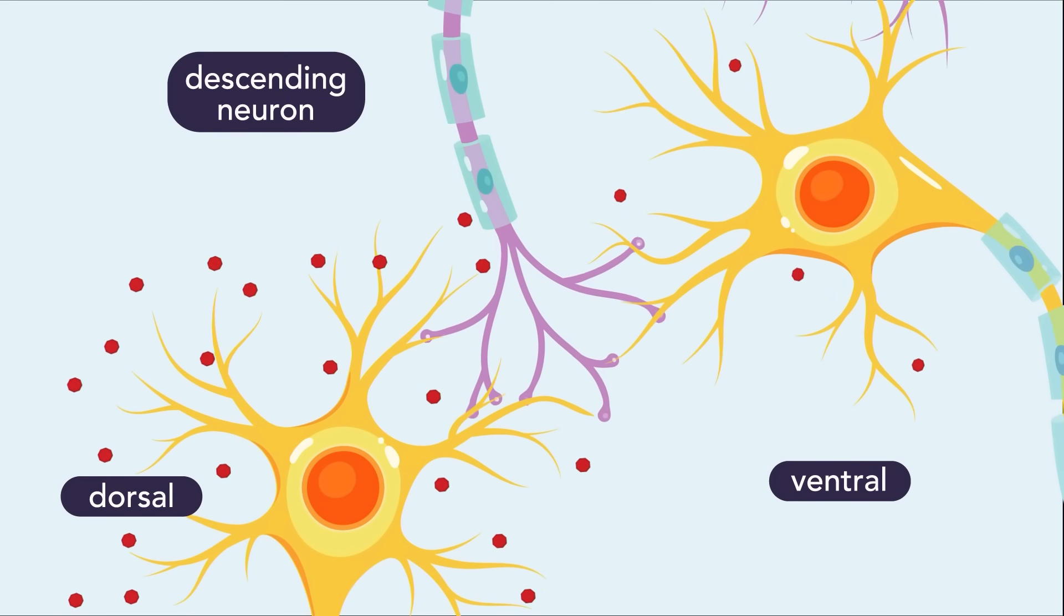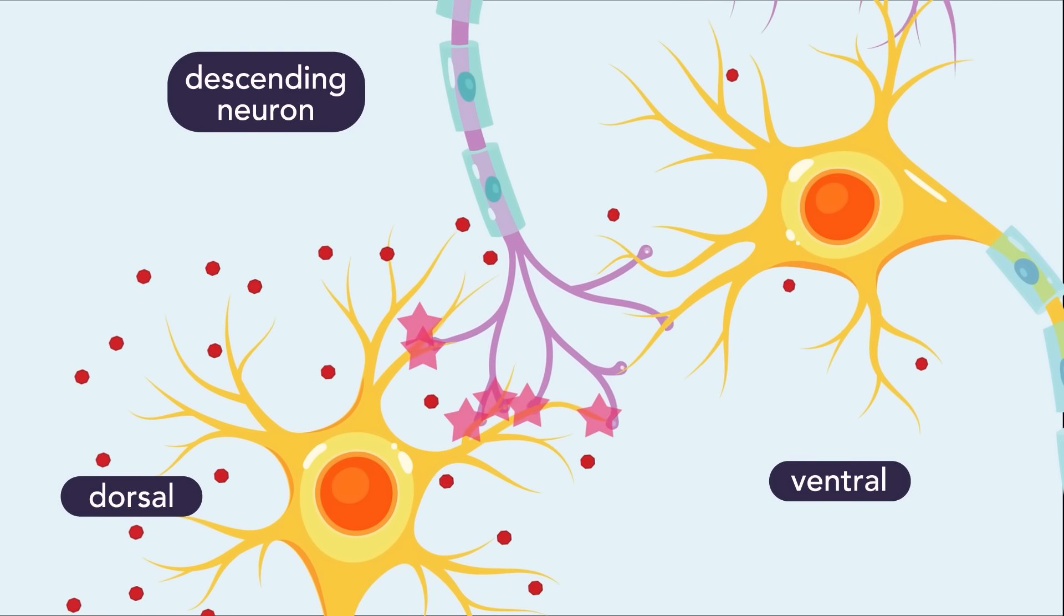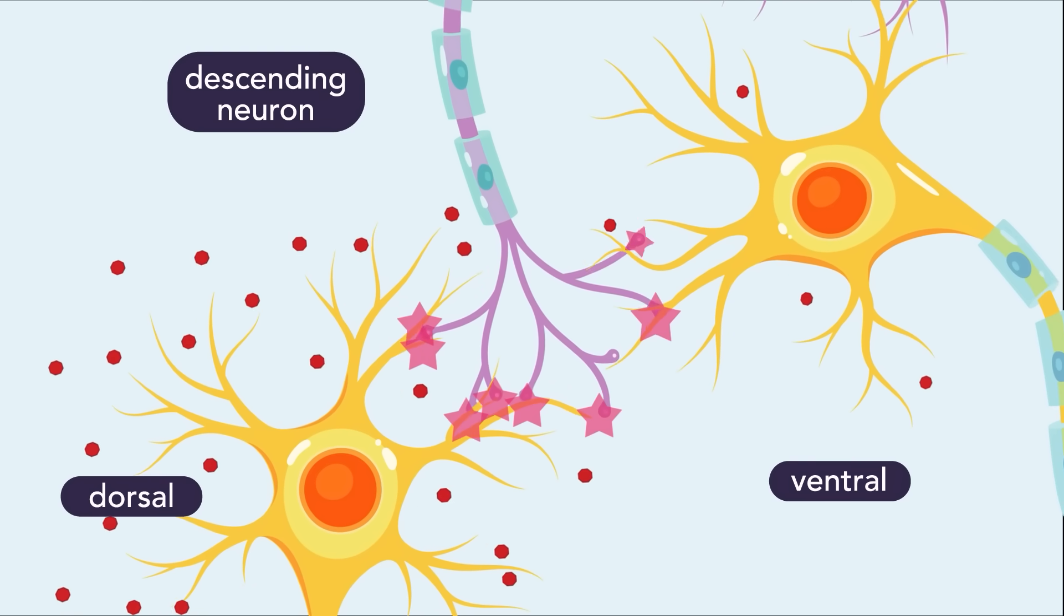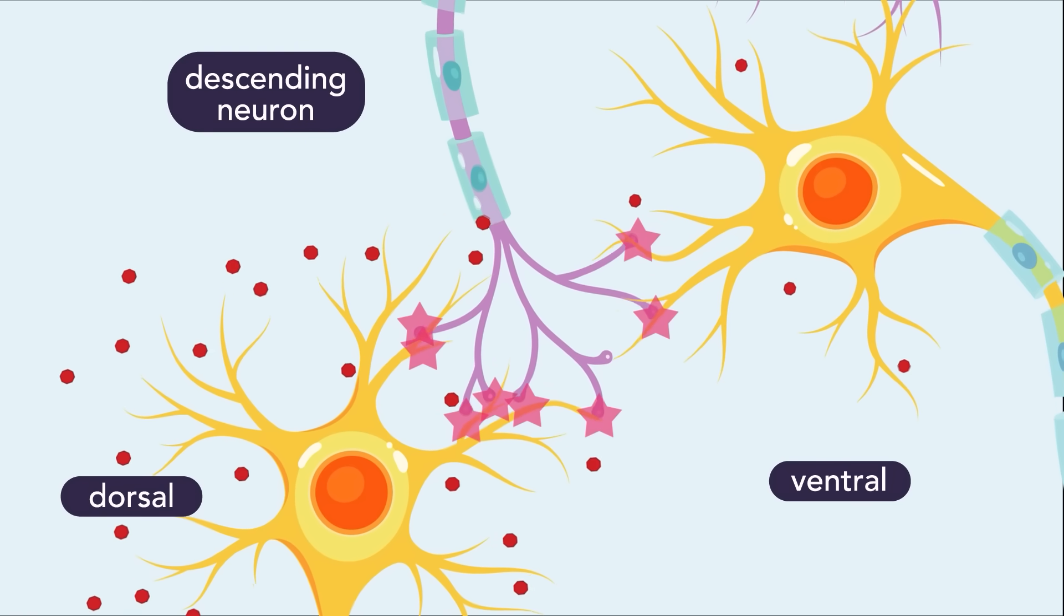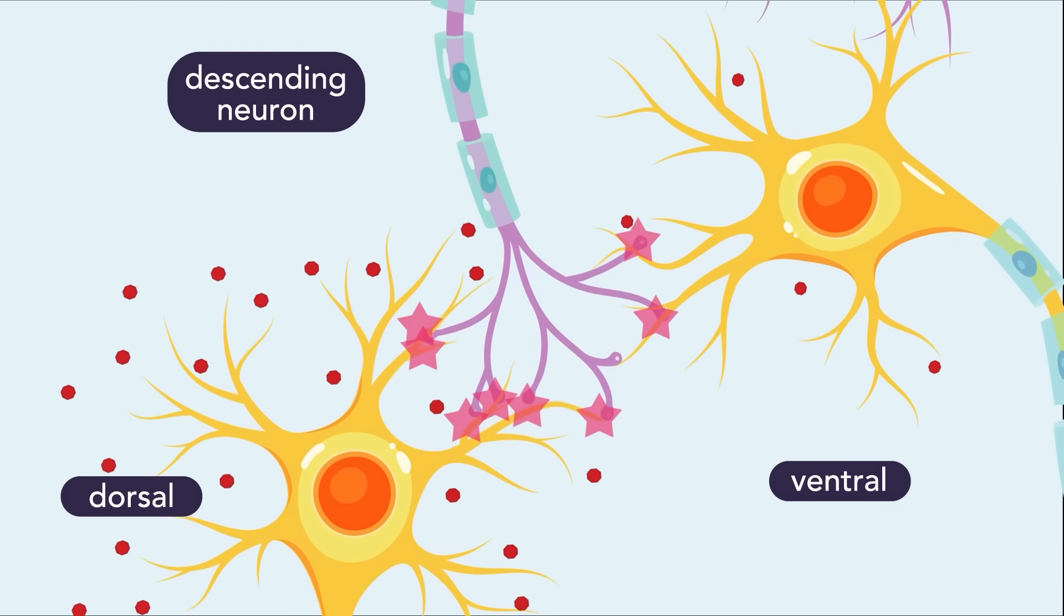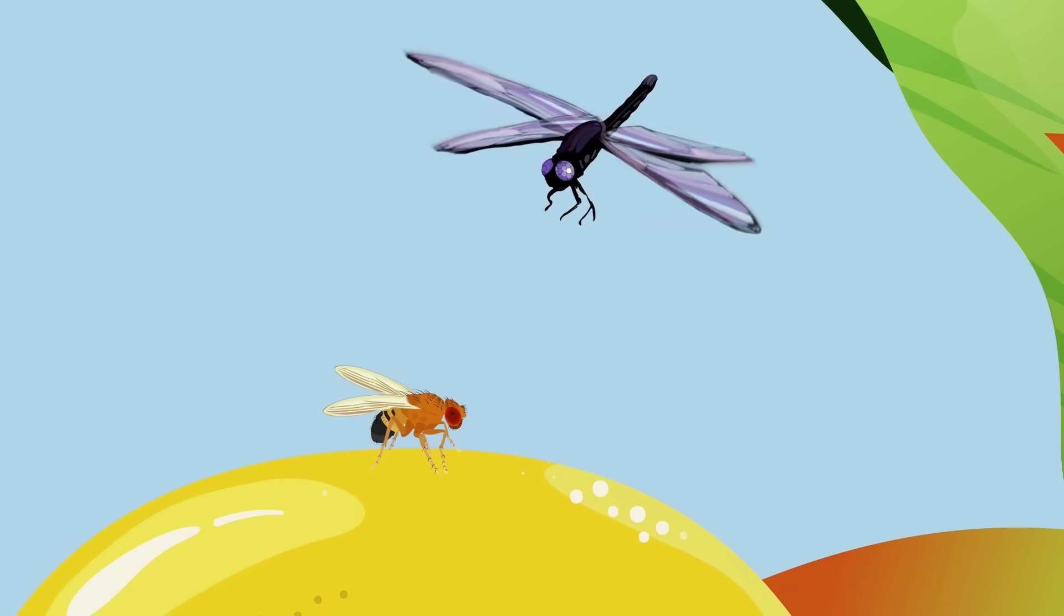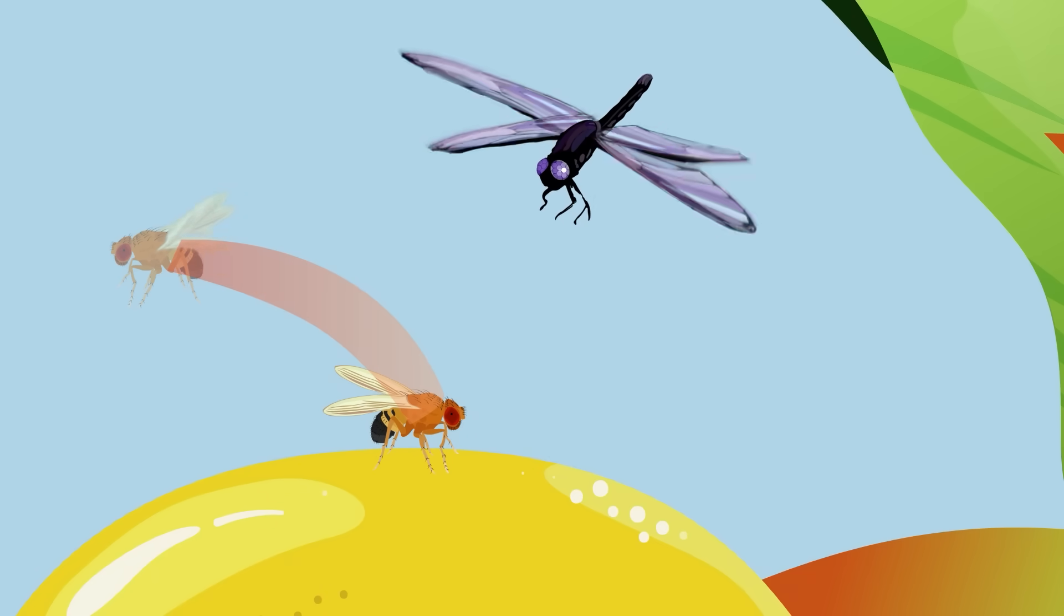For instance, neurons monitoring the dorsal or upper visual field express higher levels of Beat 6 and Dpr13, resulting in stronger connections to downstream escape neurons and higher sensitivity to dorsal visual stimuli. As predators often attack from above, the ability to detect movement in this area is vital for survival.